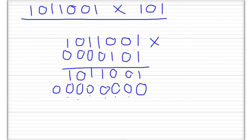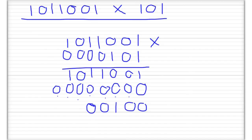Now we're going to multiply the next digit here with the numbers in the top row. We need to shift over two places this time. So: 1 times 1 is 1, 1 times 0 is 0, 1 times 0 is 0, 1 times 0 is 0, and 1 times 1 is 1. So that's what we've got so far.